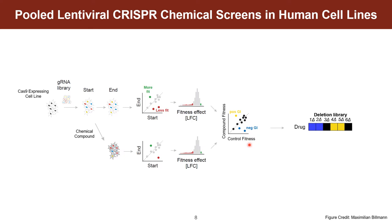On the x-axis, you're looking at control fitness versus compound fitness on the y-axis. Drawing the y equals x line, points that fall to the left of the line would be positive interactors and points that fall to the right would be negative interactors. And in taking all these CGI scores, you can then produce a drug profile.